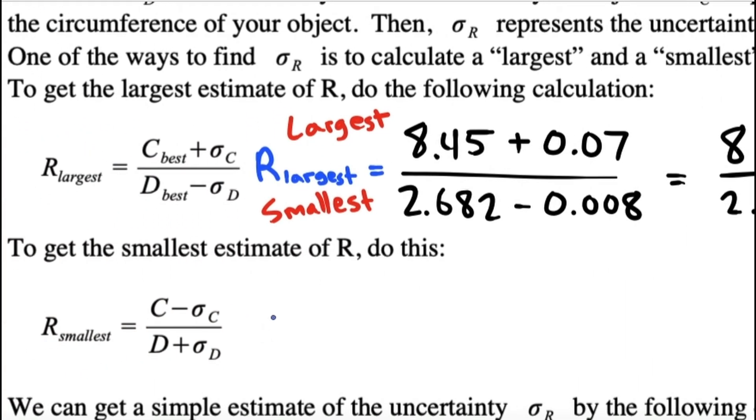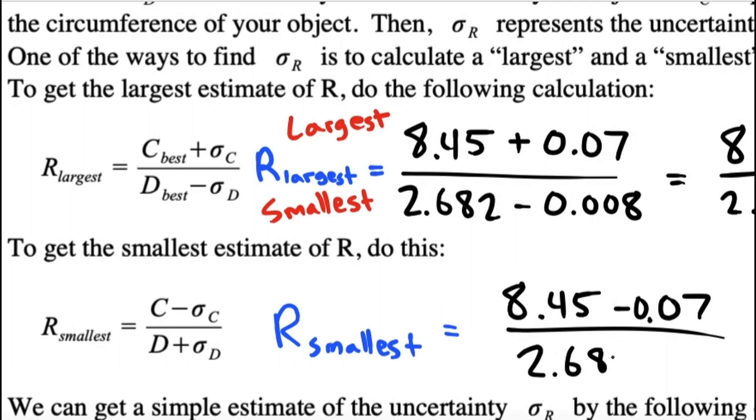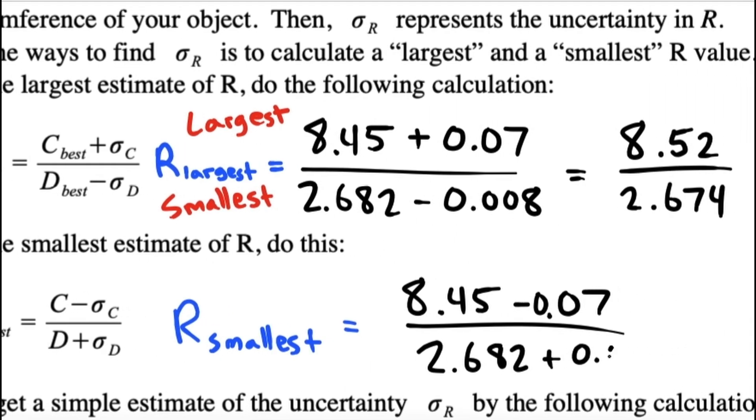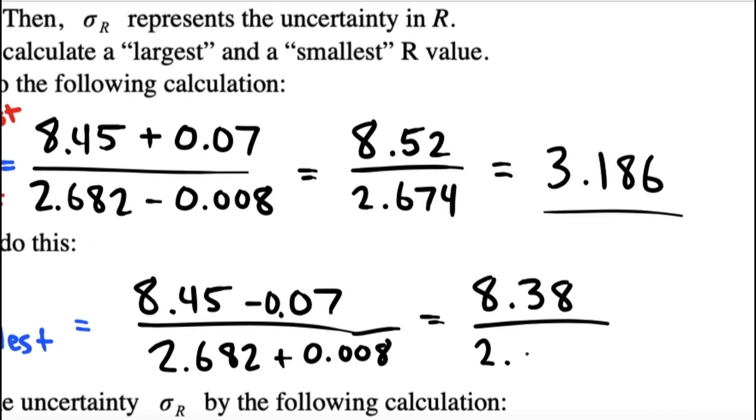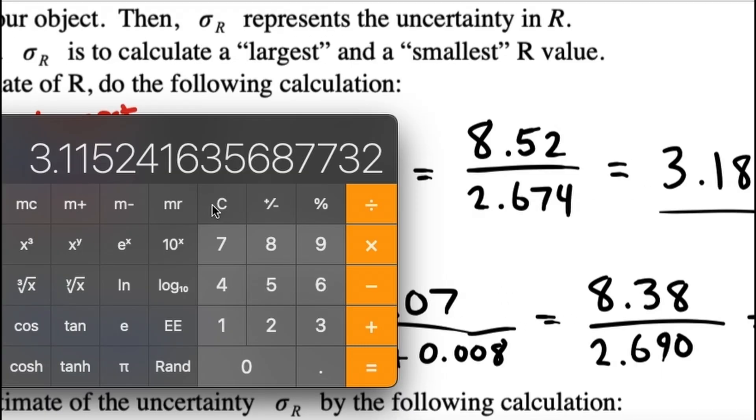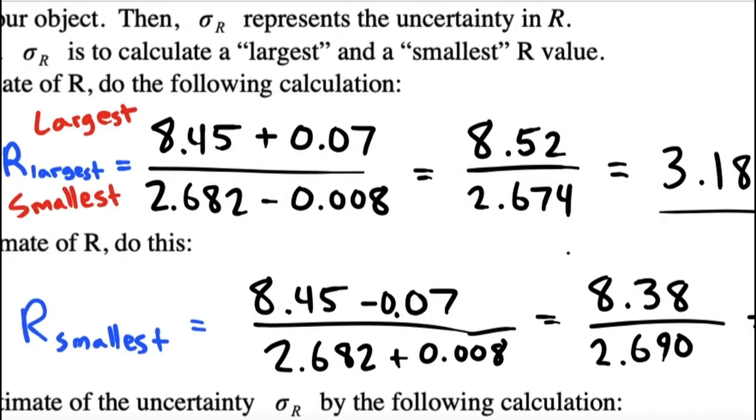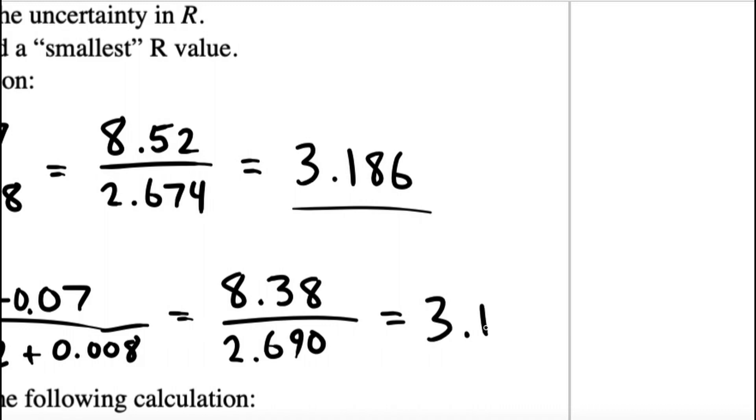So, maybe it's not 3.15. Maybe it's as big as 3.186. And then, we'll also find the smallest result. To get the smallest result, you want the smallest numerator divided by the largest possible denominator.